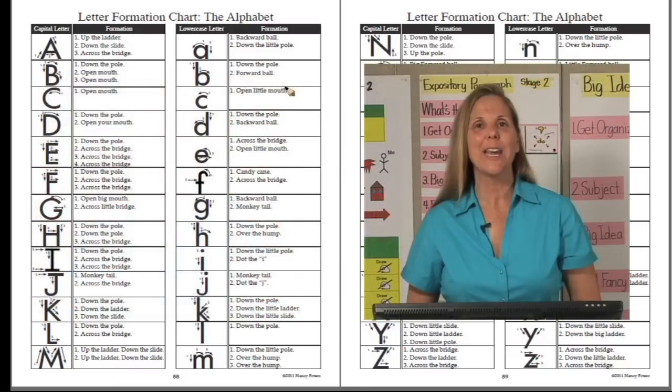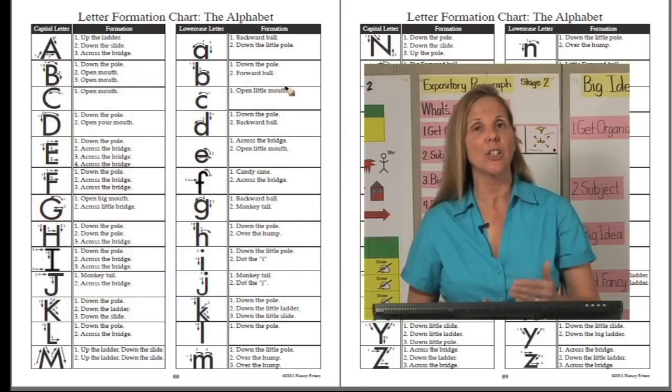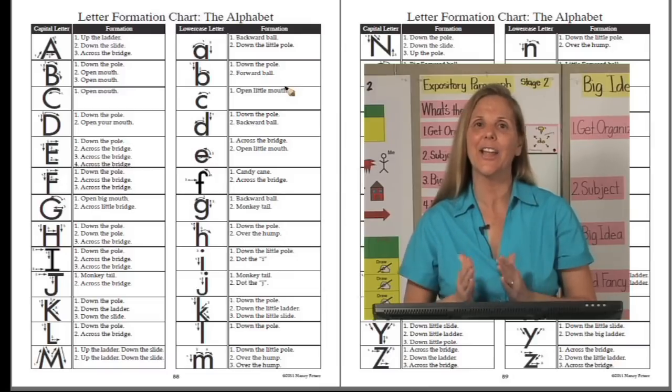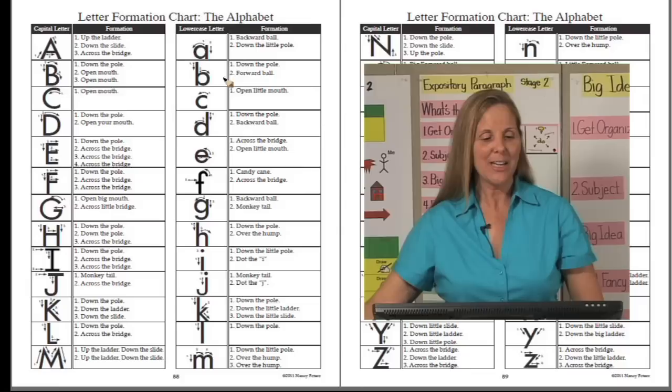On these two pages, you will see all the uppercase and lowercase letters using those 12 shapes configured in different ways to make any letter of the alphabet. Notice you'll have the letter. Here's the capital A. Then I'm going to take the shapes that we learned, the little script, up the ladder, down the slide, across the bridge.